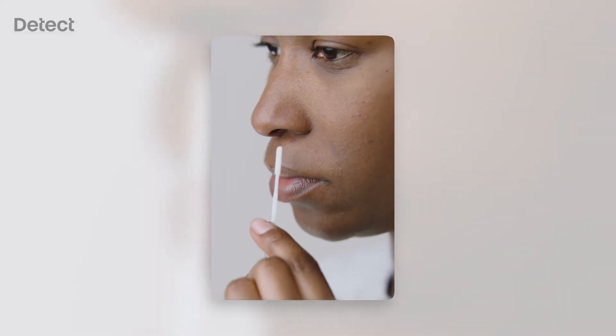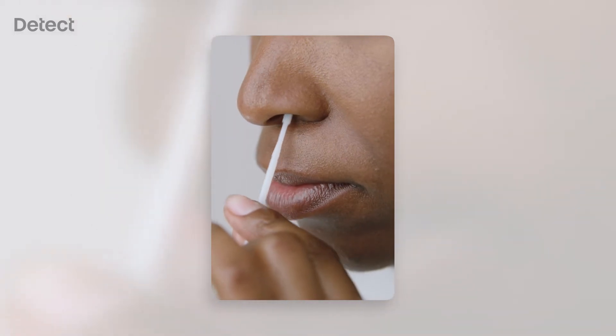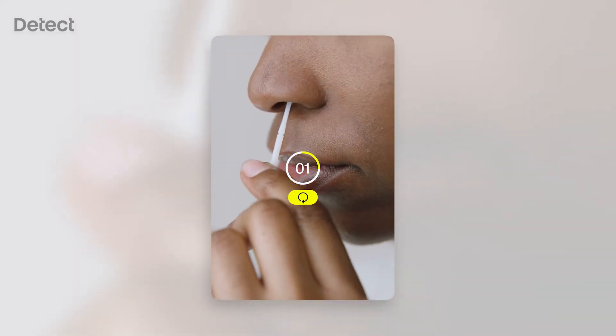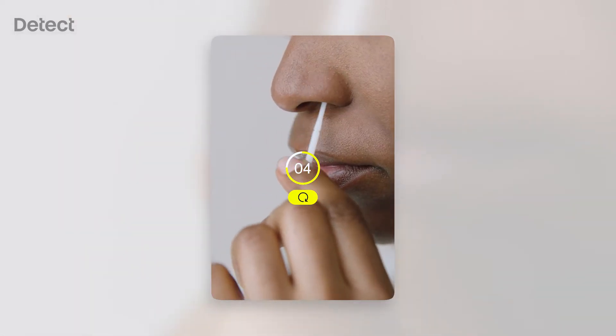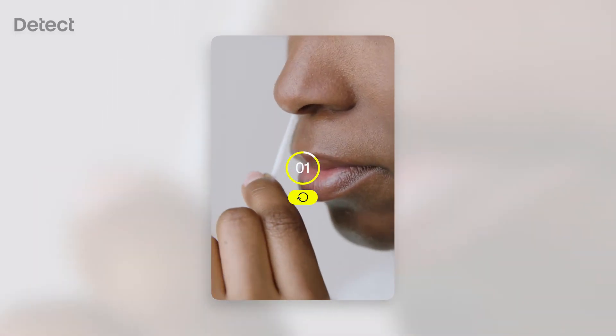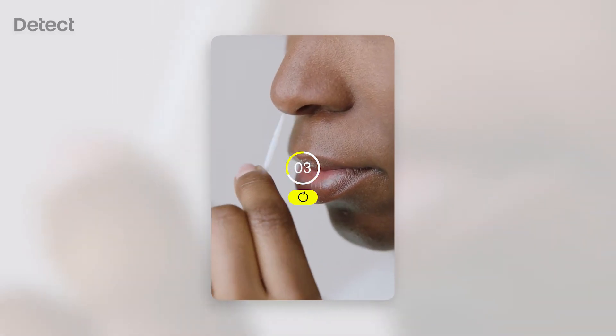Insert the swab in one nostril, just until the soft tip is completely inside. Swab the inside wall of the nostril in a circle five times, keeping the swab tip in contact with the nostril wall. Repeat with the other nostril.